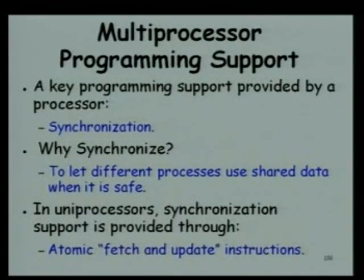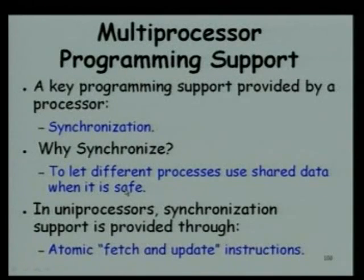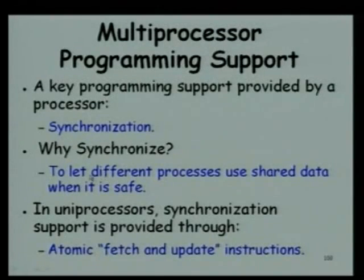It lets different processes use shared data when it is safe for them to access; otherwise, data will become inconsistent. If one process can safely access, you synchronize and allow only one. If two can safely access, you allow only those two.